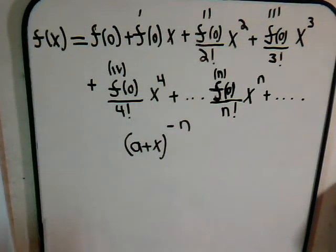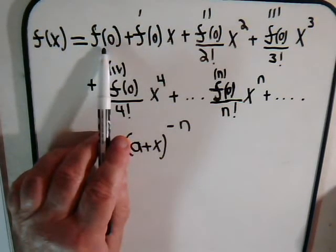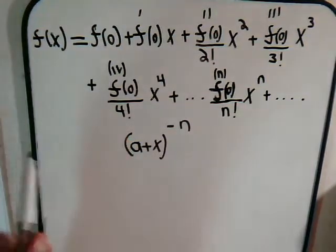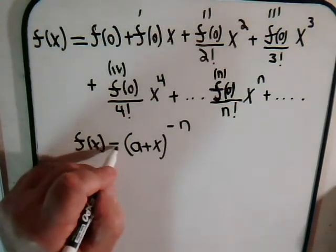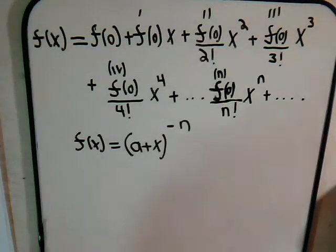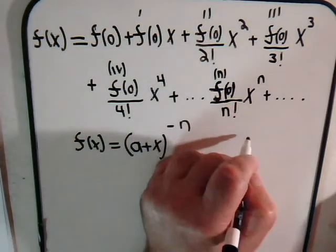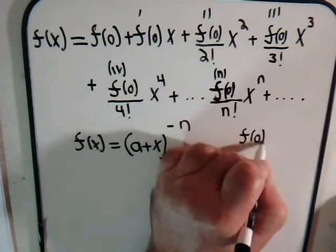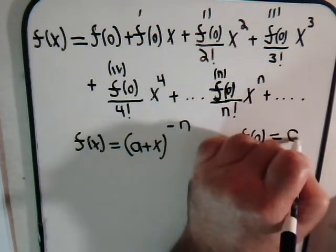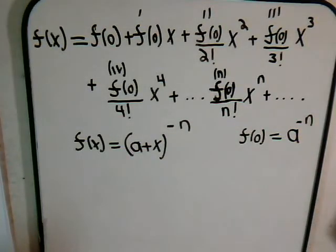As in the preceding video, we proceed along here and we notice that the f(0) term — we can say our f of x is equal to this. So when x is 0, this is just simply a to the minus n. So f(0) equals a to the minus n.